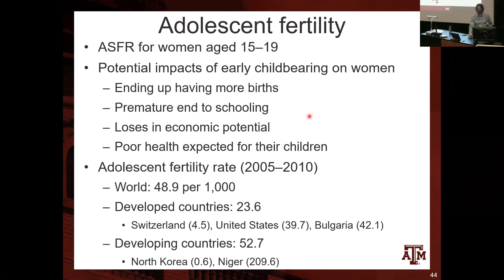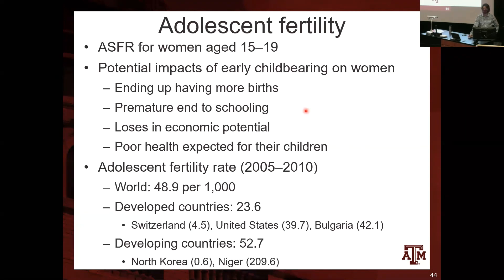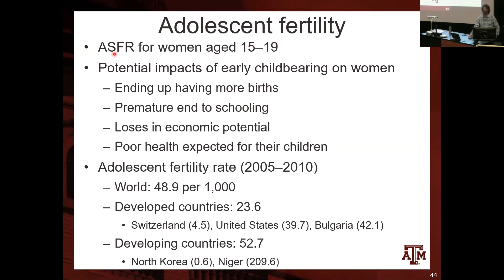The next topic is adolescent fertility. Adolescent fertility is usually measured using the age-specific fertility rates for women between 15 and 19 years of age — exactly that first age group I was showing in the Excel spreadsheet.